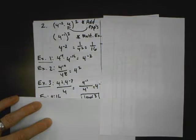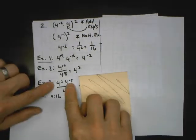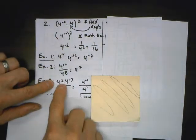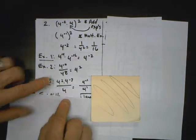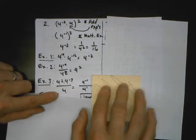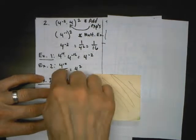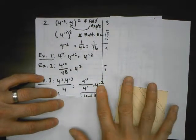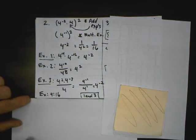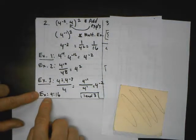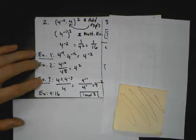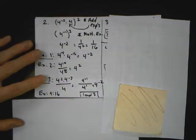Expression 3: I do the top first — 4 squared times 4 to the negative 3. I add the exponents: positive 2 plus negative 3 is negative 1, over 4 to the first. Dividing, I copy the base and subtract: negative 1 minus positive 1 is negative 2. That worked. Expression 4 is 16, but it's the same as 1 over 16, not 16. So the answer is expressions 1 and 3.